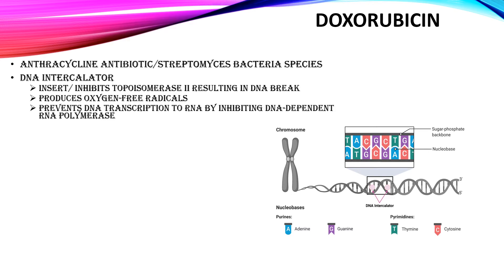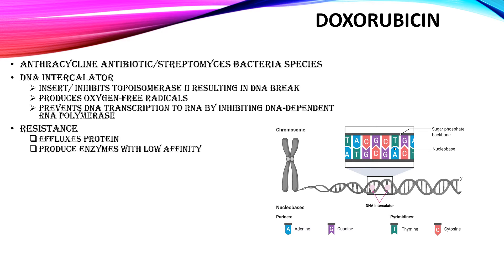Doxorubicin also produces oxygen free radicals and breaks DNA strands. Additionally, it prevents DNA transcription to RNA by inhibiting an enzyme called DNA-dependent RNA polymerase. Cancer cells can establish resistance to doxorubicin by producing a protein that effluxes the drug out of the cell, preventing accumulation of doxorubicin inside the cell. They may also produce topoisomerase enzymes that have a low affinity to bind to doxorubicin.